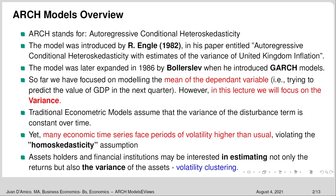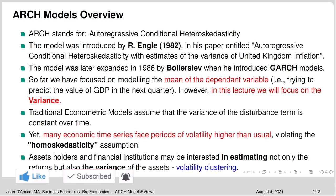So far we have focused on modeling the mean of the dependent variable — trying to predict the value of GDP in the next quarter, inflation, or interest rates. However, in this lecture we are not going to focus on the mean; we are going to focus on the variance. Traditional econometric models assume that the variance of the disturbance term is constant over time, yet many economic time series face periods of higher volatility, violating the homoscedasticity assumption. Therefore asset holders and financial institutions may be interested in estimating not only the returns but also the variance of assets.